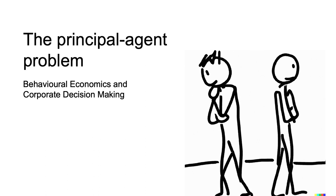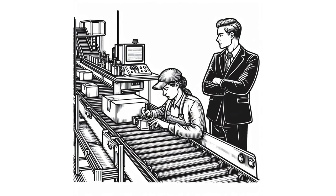In the case of an employer and employee, the employer is the principal and the employee the agent. The misalignment of interests creates a challenge in designing incentives to align those interests. In this video, I examine two classes of principal-agent problems.